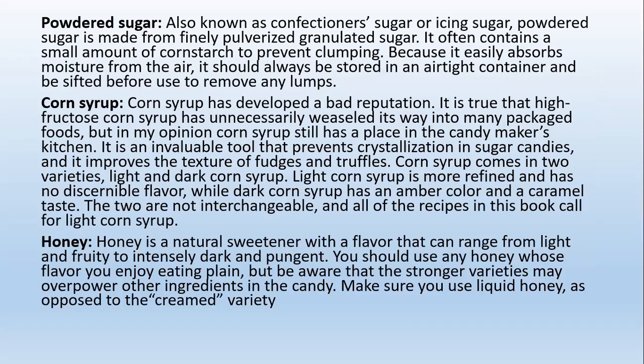Powdered sugar, also known as confectioner's sugar or icing sugar, is made from finely pulverized granulated sugar — it should be sifted. It often contains a small amount of corn starch to prevent clumping, because very fine sucrose powder is highly hygroscopic and can form clumps or larger granules. The corn starch acts as an anti-caking agent by absorbing moisture. Powdered sugar should always be stored in an airtight container.